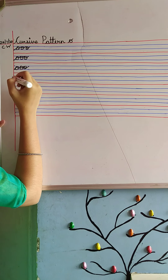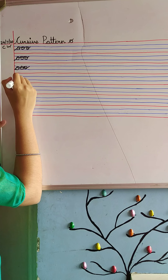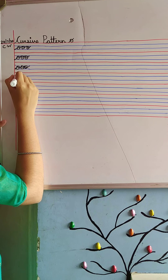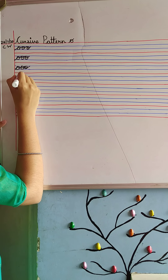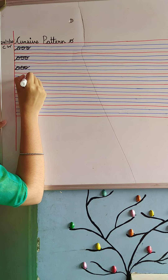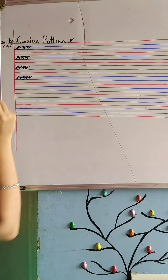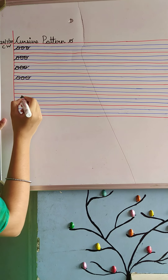The fourth time we write, touching the margin line from the second blue line, we're going to write three times: one, two, three. O for oval.